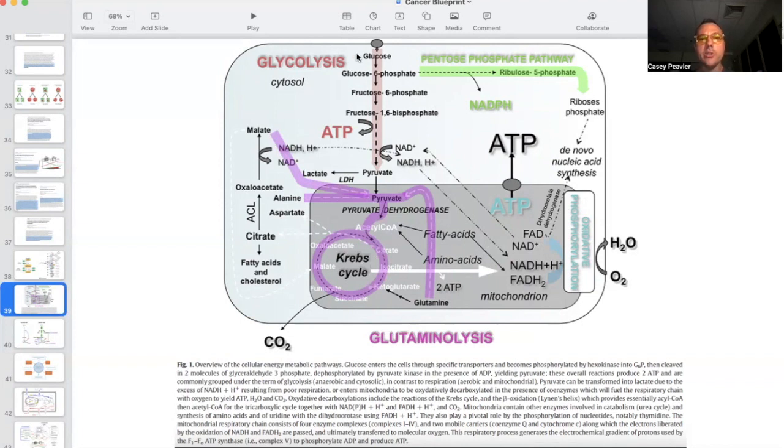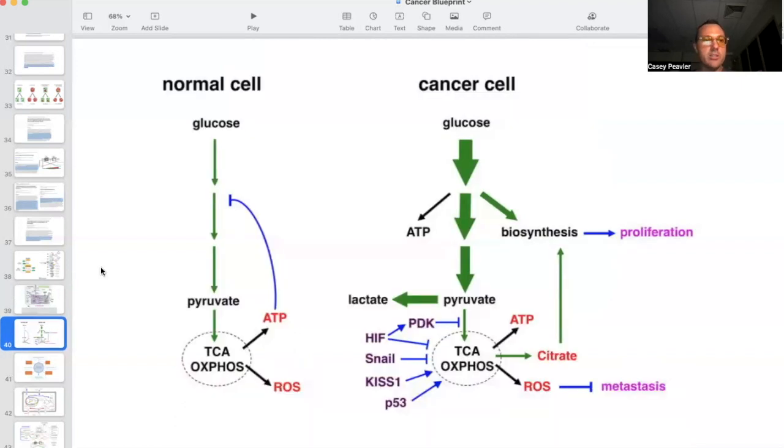However, as we've been talking about, sugar does not use the Krebs cycle efficiently and does not use oxidative phosphorylation like it's supposed to. So the majority of the ATP is made via this right here, glycolysis. And instead of pyruvate being converted into acetyl-CoA and going into the Krebs cycle, what's actually happening is pyruvate is being converted into lactate via this LDH, lactate dehydrogenase enzyme. And then we create this acidic microenvironment.